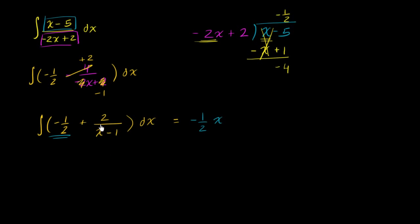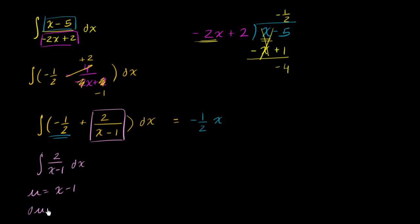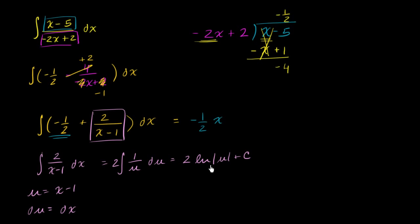If all of that sounds really confusing, I'll actually do the u-substitution. If I were just trying to evaluate the integral of two over x minus one dx, I could see that the derivative of x minus one is just one. So I could say u equals x minus one, and then du is going to be equal to dx. So we can rewrite in terms of u as two times the integral of one over u du, which we know is two times the natural log of the absolute value of u plus c. And since u is x minus one, this equals two times the natural log of the absolute value of x minus one plus c.